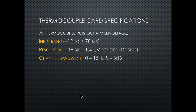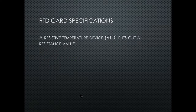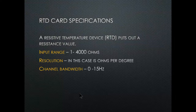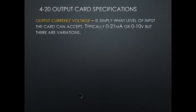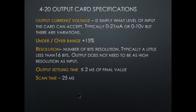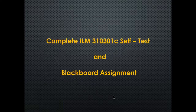An RTD card — resistive temperature device — puts out resistance values. The range is 1 to 4,000 ohms, resolution is approximately 1 per degree, channel bandwidth is 0 to 15 Hz, and scan time is 25 milliseconds. These specifications are all in the back of your book — don't worry too much about memorizing the exact values.